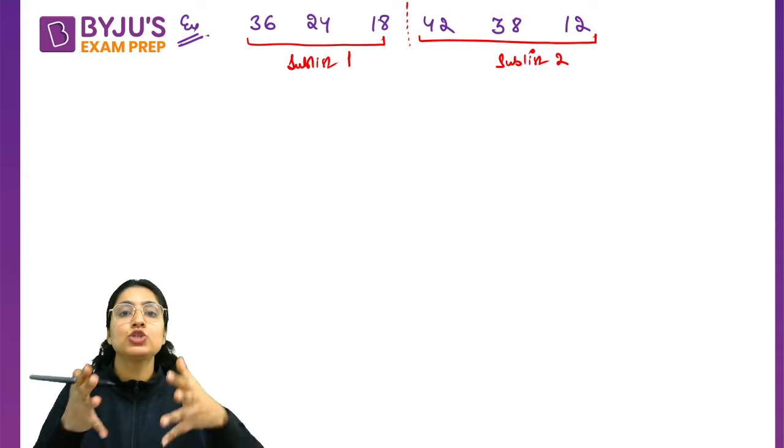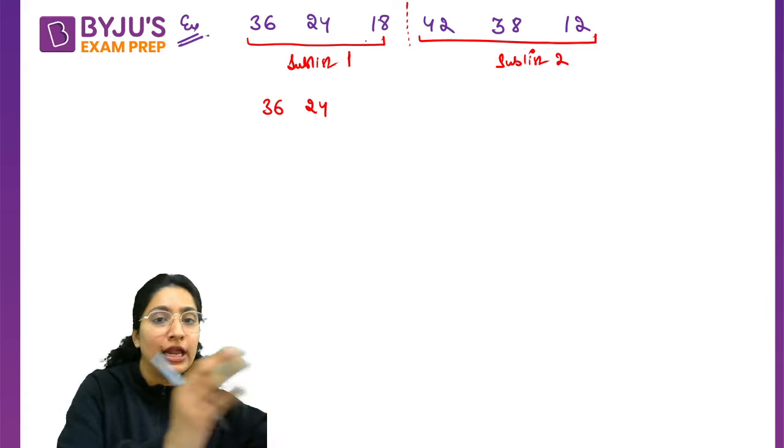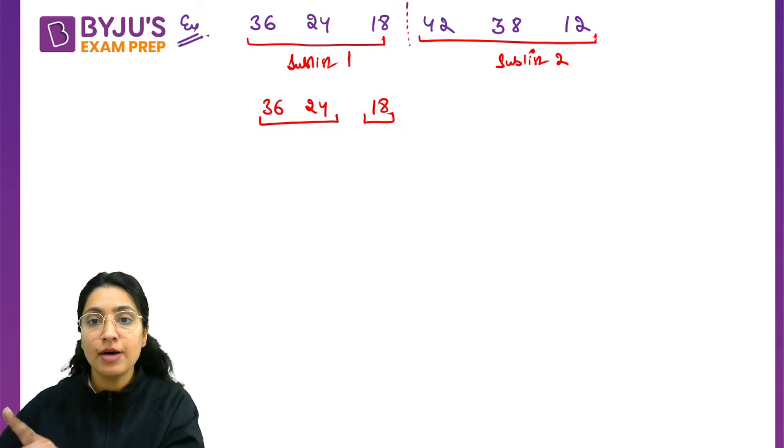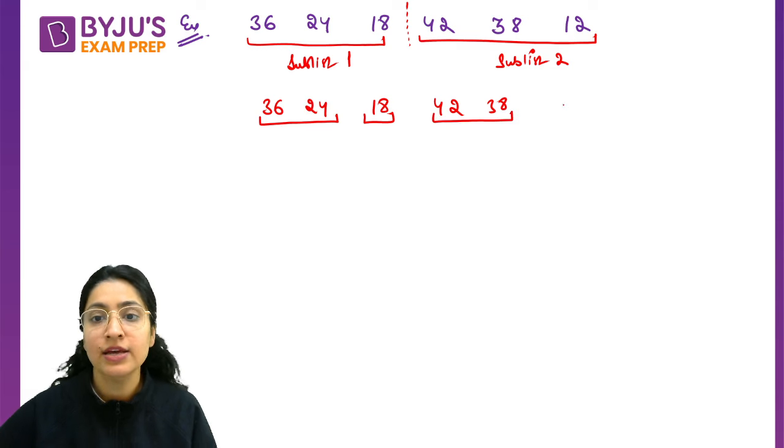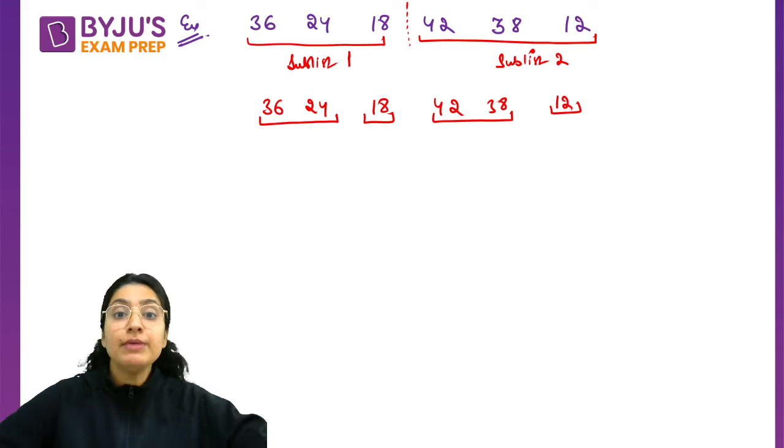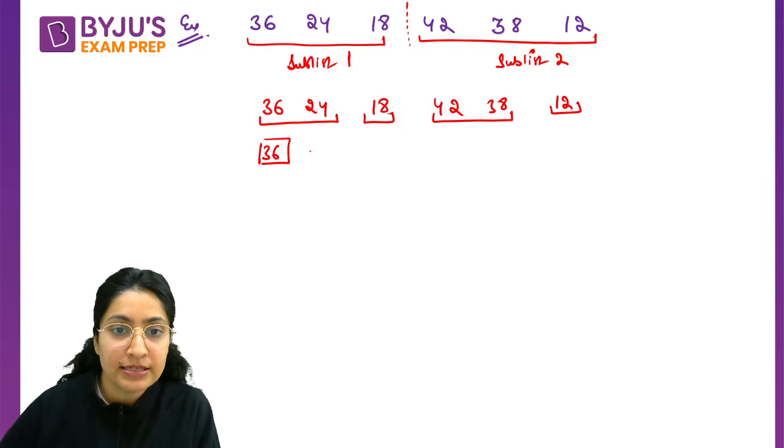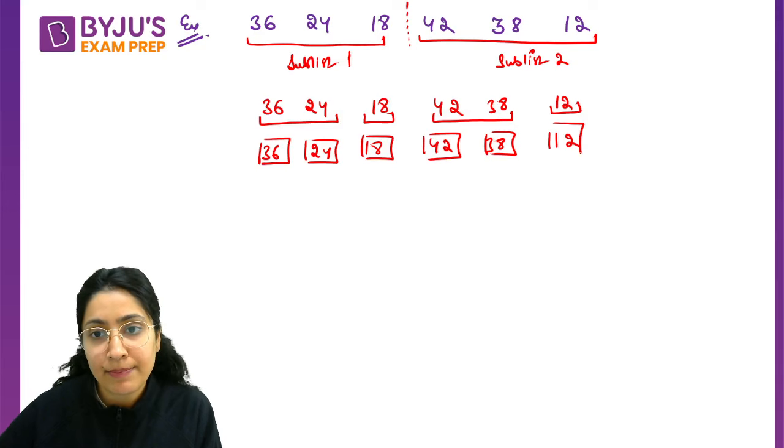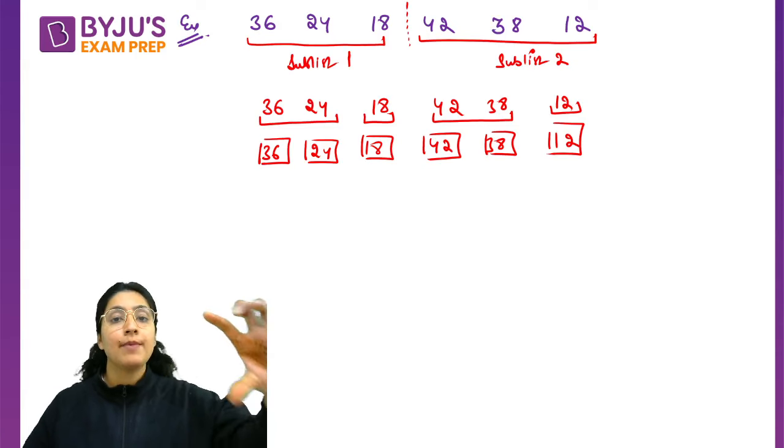Again, divide further. Divide sublist one and sublist two also. So I create one sublist with two elements and one with one element since this is odd length. I put 36 and 24 together, 18 separately. Similarly here, 42 and 38 together, and 12 separately. Again break it. Keep dividing until they become individual. Now you have single single elements: 36, 24, 18, 42, 38, and 12. Up to here your divide step is done.